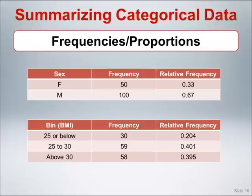For BMI category, there are a total of 147 individuals with a BMI value. Of those, 30 individuals, or 20.4 percent, have a BMI of 25 or below, considered lean. 59 individuals, or 40.1 percent, have a BMI from 25 to 30, considered overweight. And 58 individuals, or 39.5 percent, have a BMI above 30, considered obese.